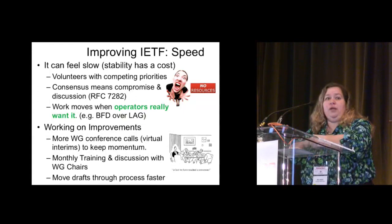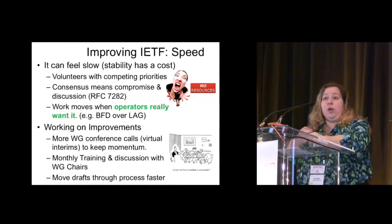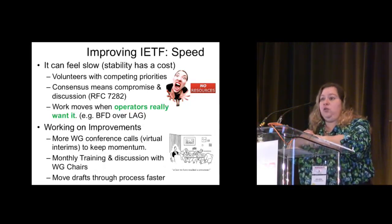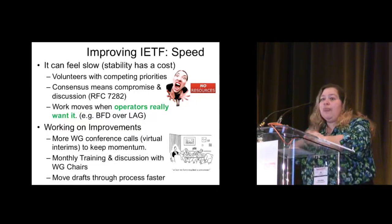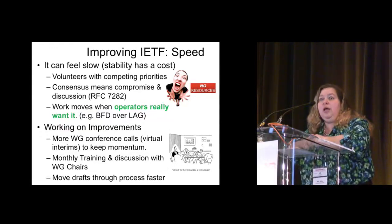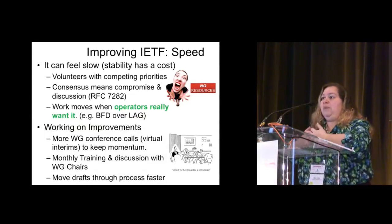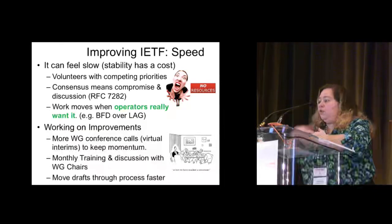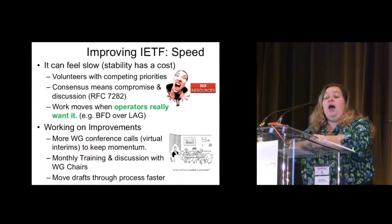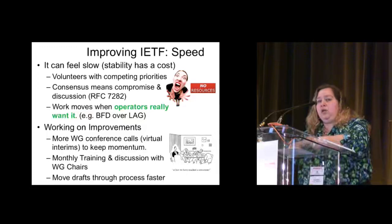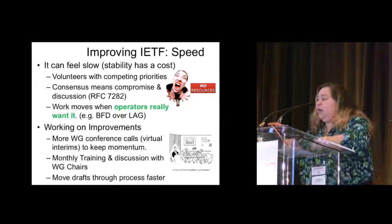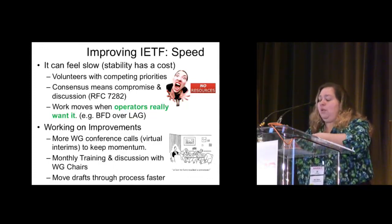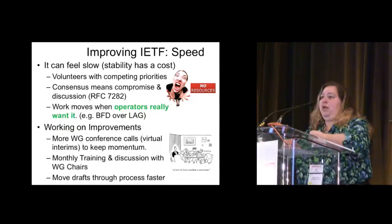I've been working on improvements, particularly in the routing area: encouraging conference calls for working groups so we get high-bandwidth communication going and resolve issues so things don't stall out. Trying to make those conversations happen sooner, whether on the list or in virtual interims, to keep the momentum going. Also doing training to coordinate across the area and get working group chairs on similar pages. Those are all up on YouTube for anyone who's interested. Finally, we can move drafts through the process quickly. The biggest factor is responsive authors — it's not the process. The issues tend to be there. Much of the time we can get stuff done when it's clear that it's needed.